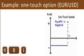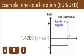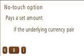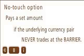For example, imagine you buy a one-touch option on the EURUSD with a barrier of 1.42. If the EURUSD currency pair moves to touch that barrier of 1.42, you will be profitable. A no-touch option is an option that automatically pays a set amount if the underlying currency pair never trades at or beyond a specified price level, known as the barrier, before expiry. In other words, you make money on a no-touch option if the currency pair never touches a predetermined price.